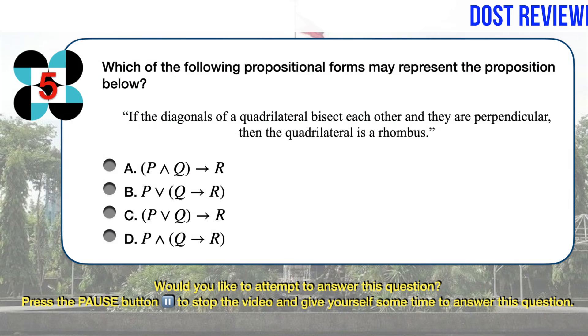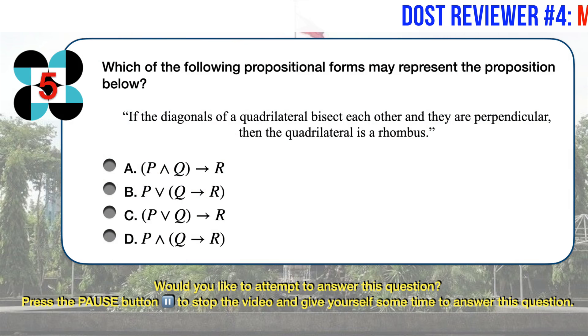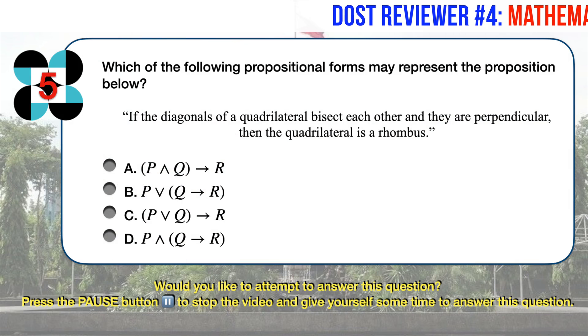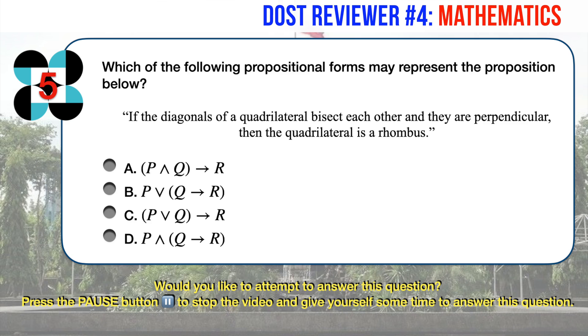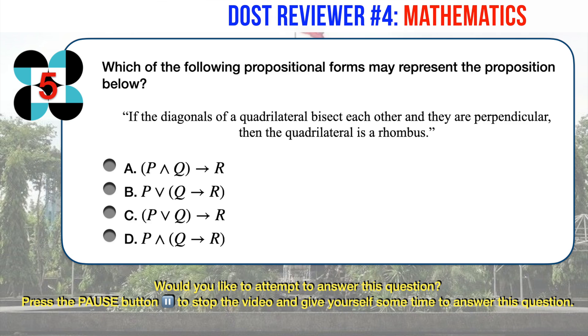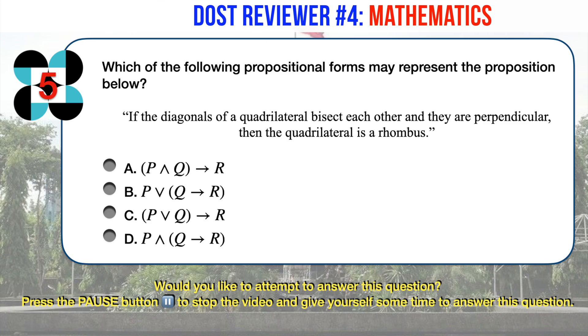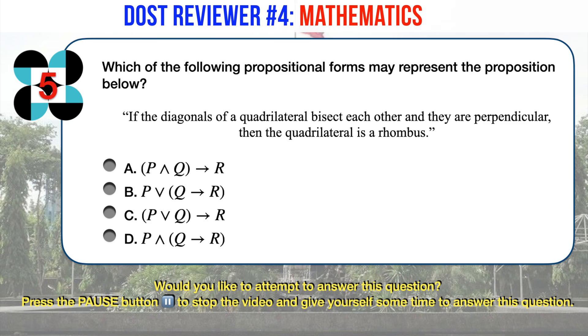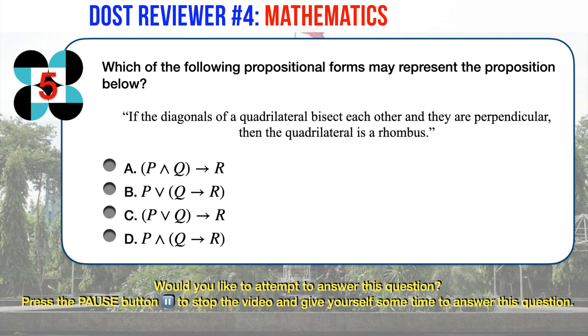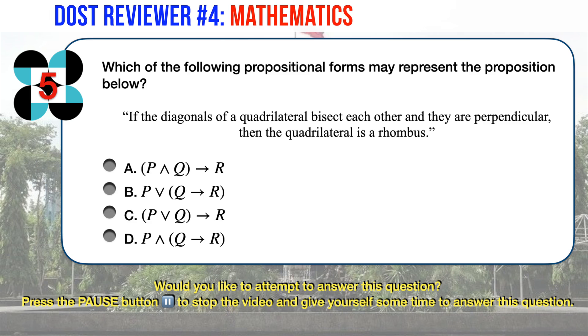Math question number 5. Which of the following propositional forms may represent the proposition: if the diagonals of a quadrilateral bisect each other and they are perpendicular, then the quadrilateral is a rhombus?